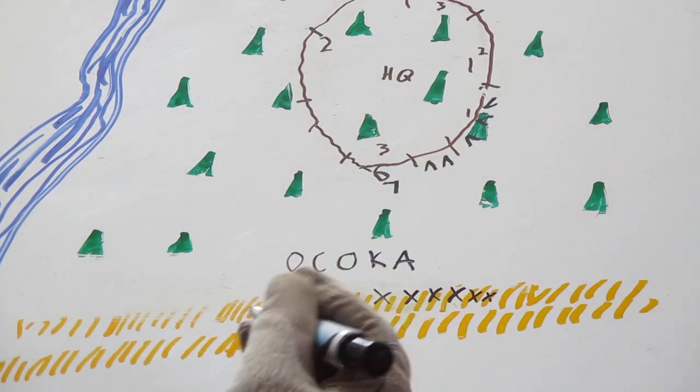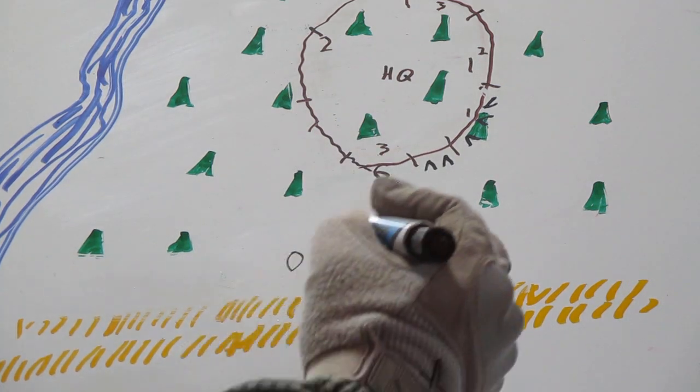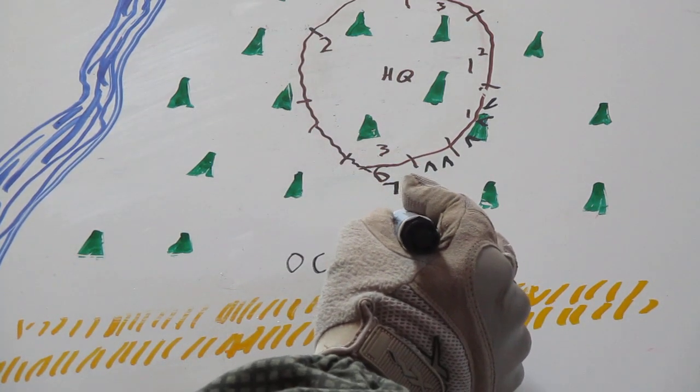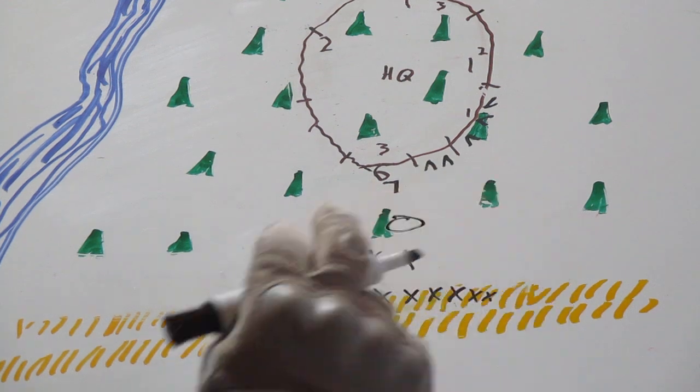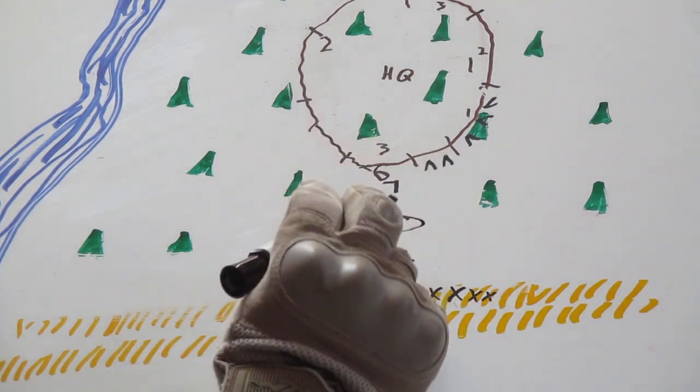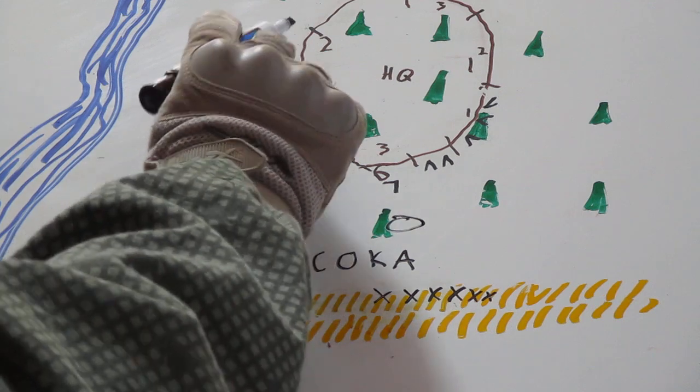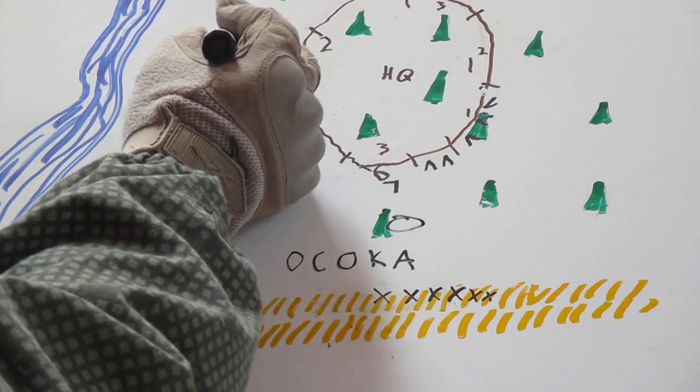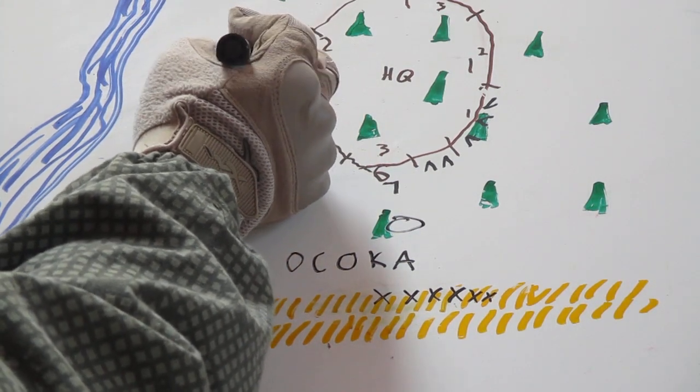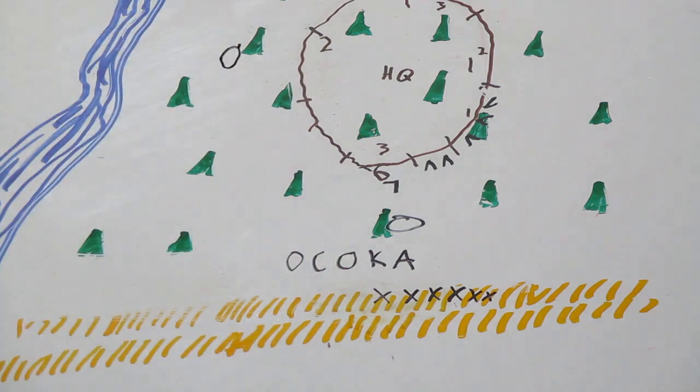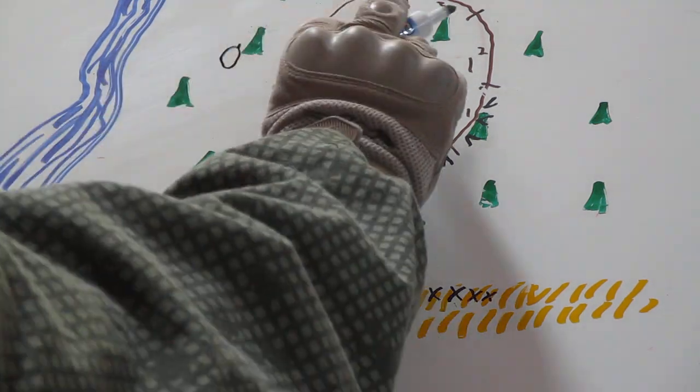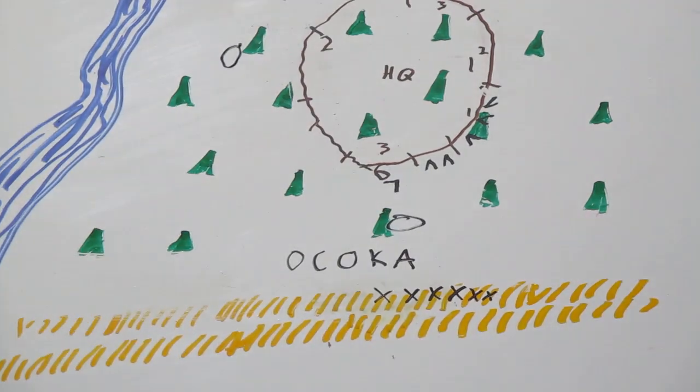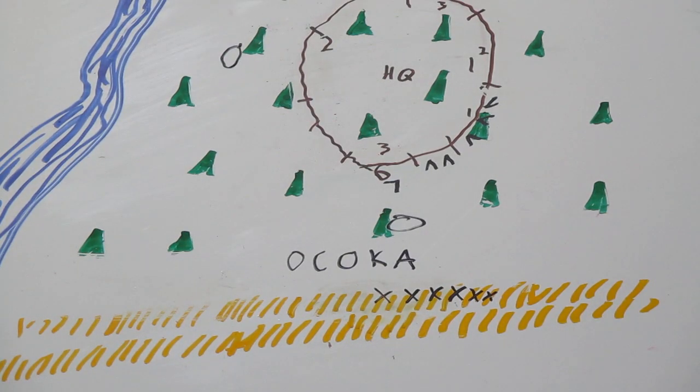Third platoon down here, they're going to set up an LPOP down here before the edge of the tree line. Second platoon over here, they're going to set up one near the edge of the tree line over here watching the river. First platoon, they'll set up one over here, wherever it's determined that the enemy could sneak up into the perimeter.